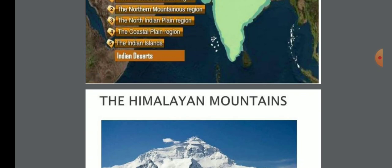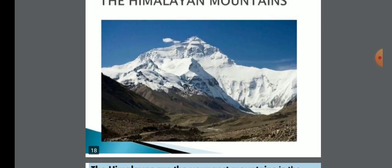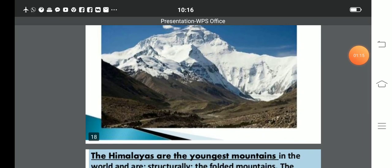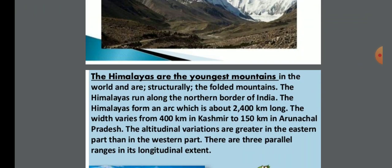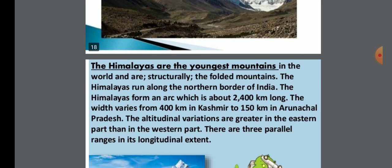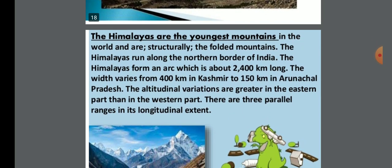First of all, I will start with the first physiographic division: the Himalayan Mountains. The Himalayas are the youngest mountains in the world. They run along the northern border of India and form an arc which is about 2400 km long.